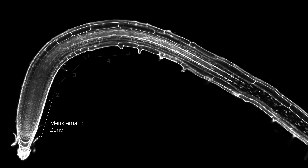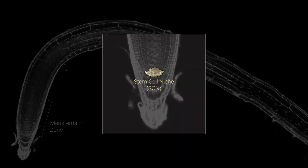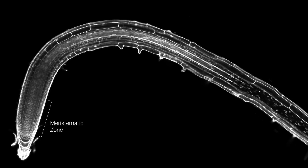Near the tip is the meristematic zone, a region of actively dividing cells. It contains a stem cell niche, or SCN, a group of cells that remain undifferentiated and divide asymmetrically to produce daughter cells. As they get pushed out from the SCN and meristematic zone, they pass through the transition zone, where they undergo physiological changes as they prepare for elongation, forming central vacuoles and remodeling their cell walls.